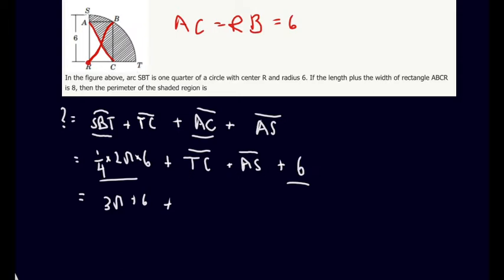So there's one way we could do this, which is by setting unknowns, like maybe X for TC, maybe Y for AS, and then creating systems of equations using Pythagorean theorem and all that mess. But there is an easier way to do this.